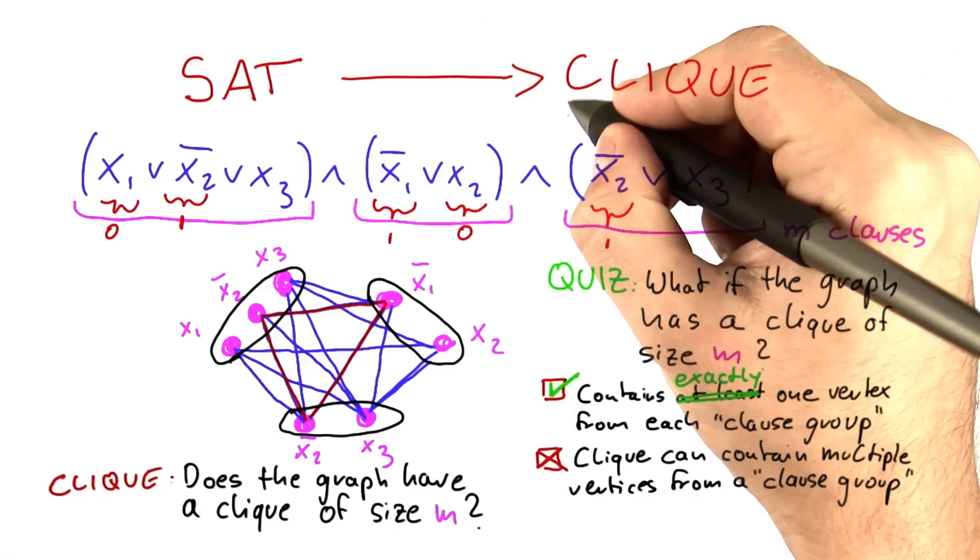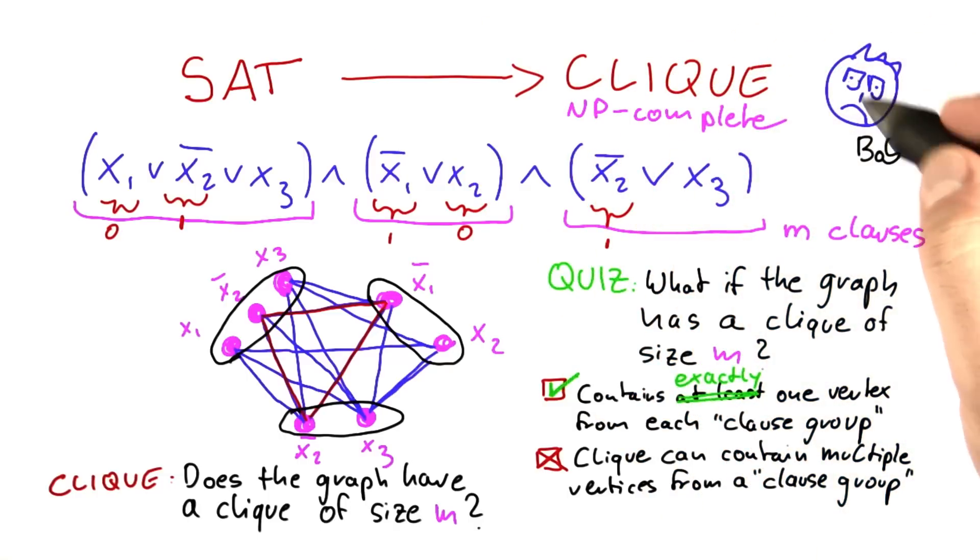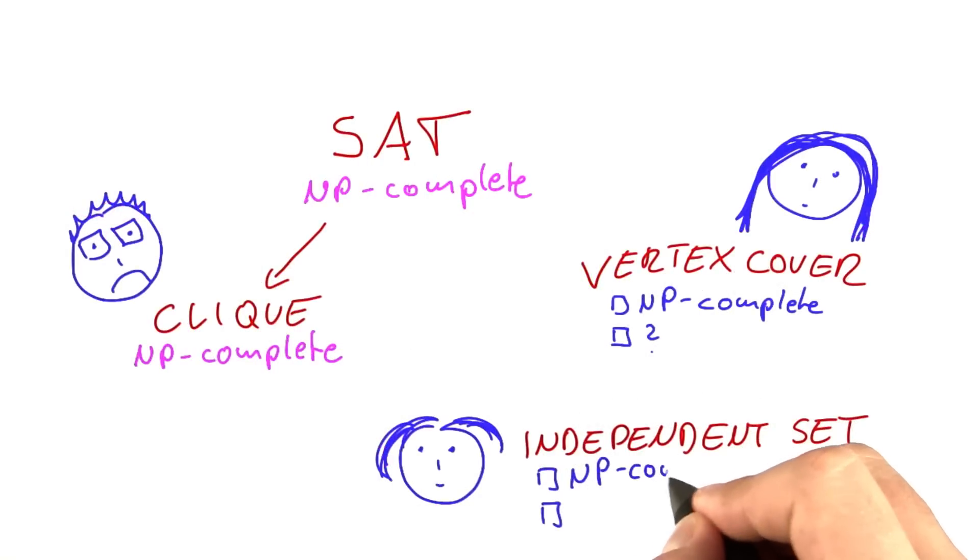So now that we have this reduction, we know that clique is NP-complete, which of course makes Bob a little unhappy. So now what about vertex cover and independent set? Are those problems NP-complete or are we not sure yet?